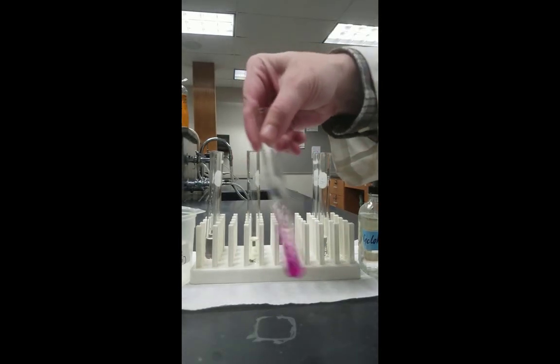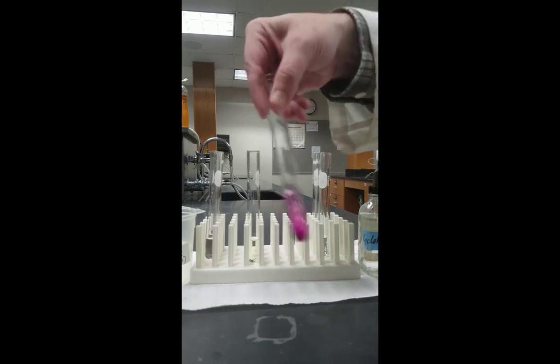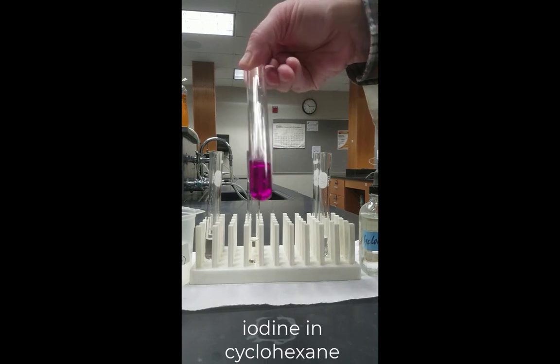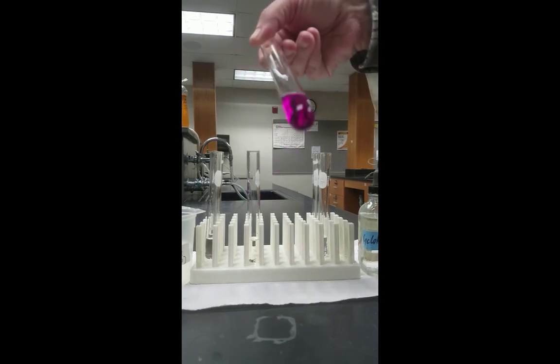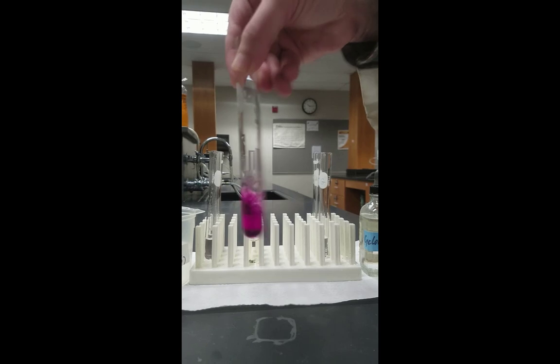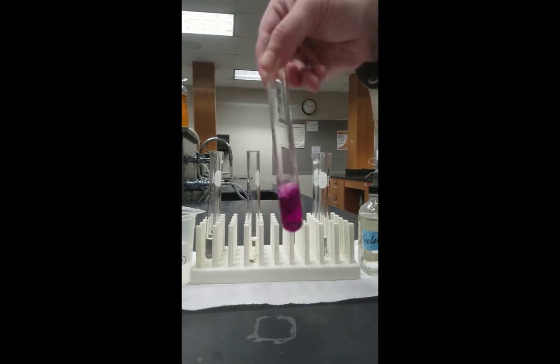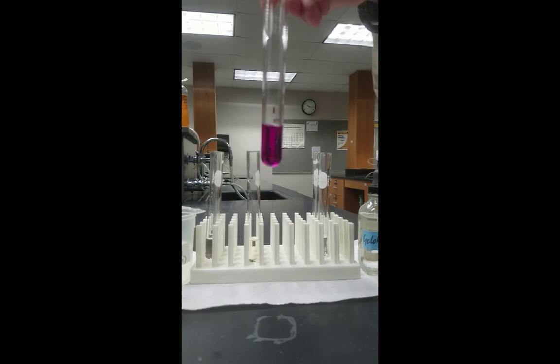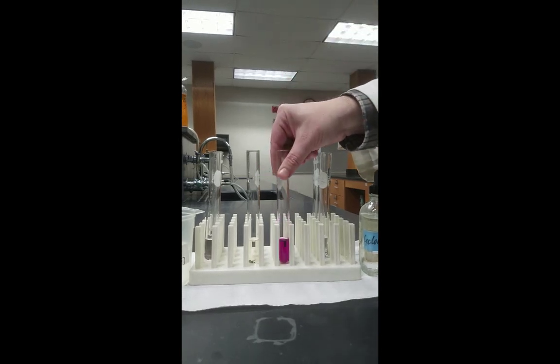On the other hand, when we shake the iodine in cyclohexane, it takes on a deep purplish color, just like the solid iodine had. If we look very carefully, it will appear that virtually all of the solid iodine has dissolved.